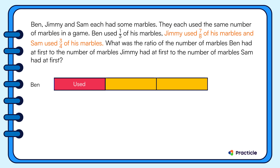What fraction of his marbles did Jimmy use? He used seven-eighths of his marbles. The fraction seven-eighths means we are looking at seven out of a total of eight parts that represents Jimmy's marbles. Since each of the boys used the same number of marbles, seven units of Jimmy's marbles must be as long as one unit of Ben's marbles.